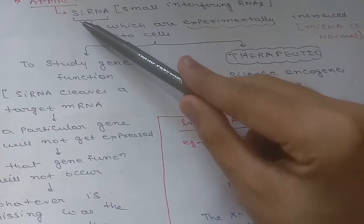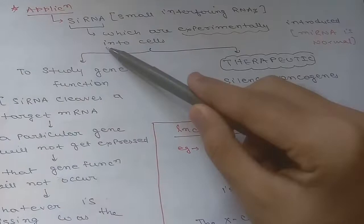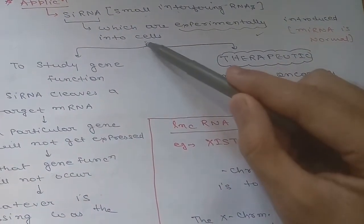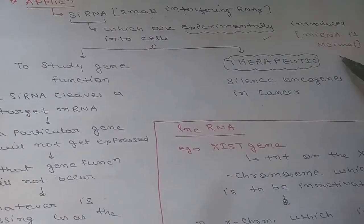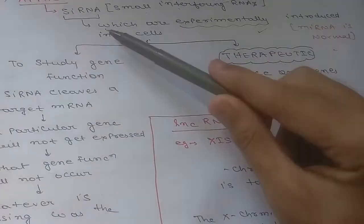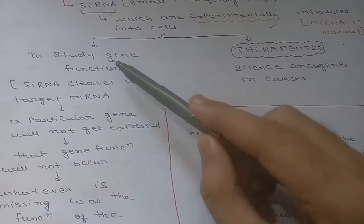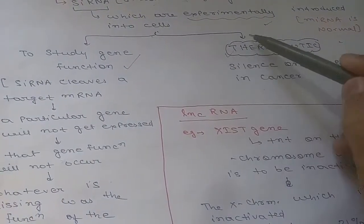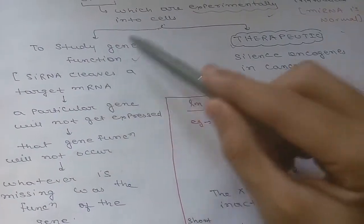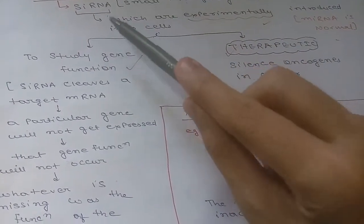The application of non-coding RNA includes siRNA, known as small interfering RNA. siRNA is experimentally introduced into the cell. There are two main purposes for using siRNA: the first is to study gene function, and the second is therapeutic use.